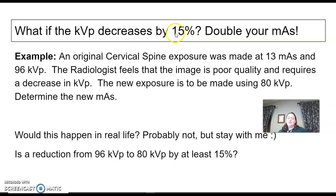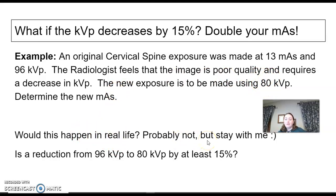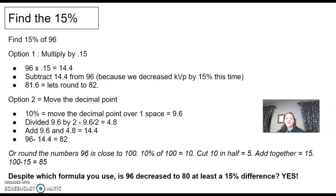Here's an example that probably won't happen in your lifetime, but here it is. An original C-spine exposure was made at 13 mAs at 96 KVP. The radiologist feels the image is poor and wants you to decrease the KVP. The new exposure has to be made using 80 KVP — determine the new mAs. Is a reduction from 96 KVP to 80 at least 15%? You can multiply by 0.15, which gives you 14.4, then subtract because we decreased the KVP.